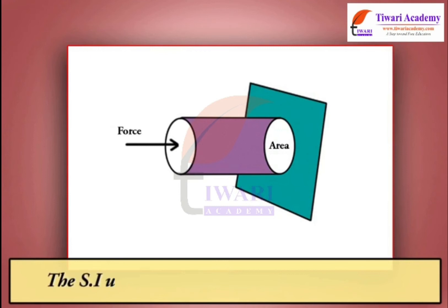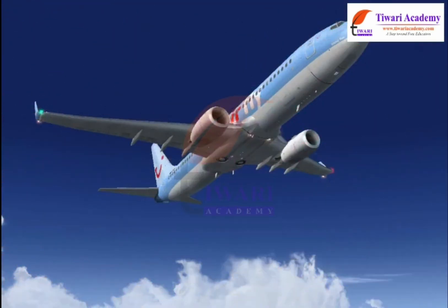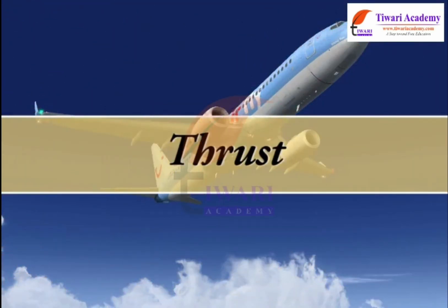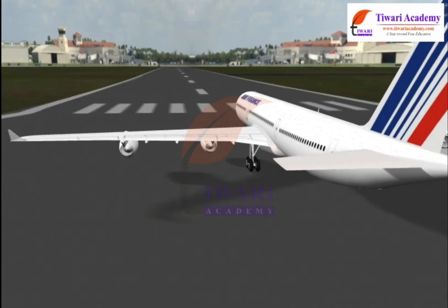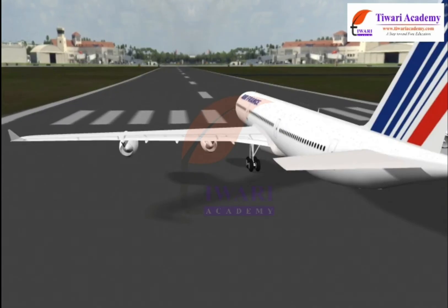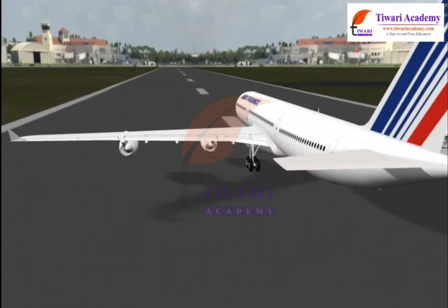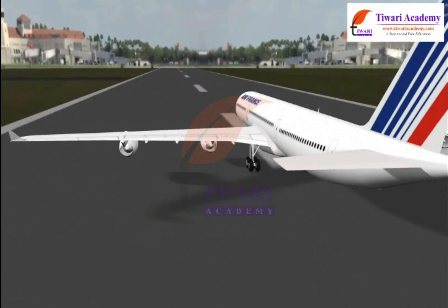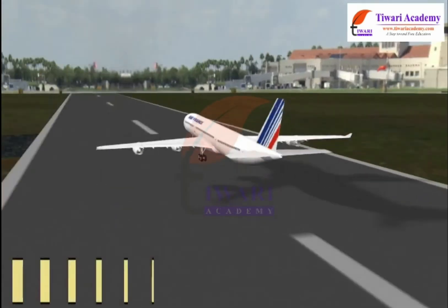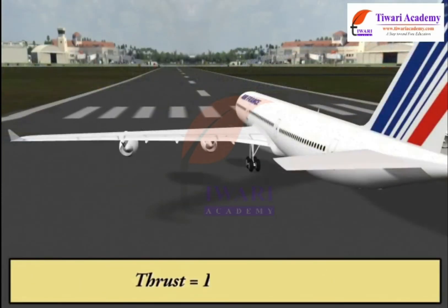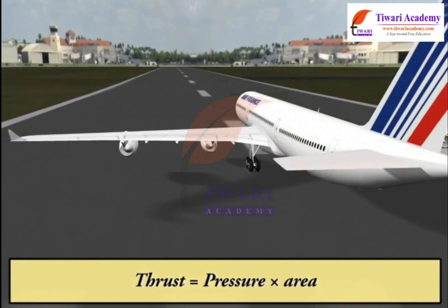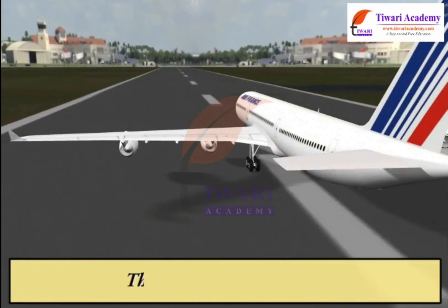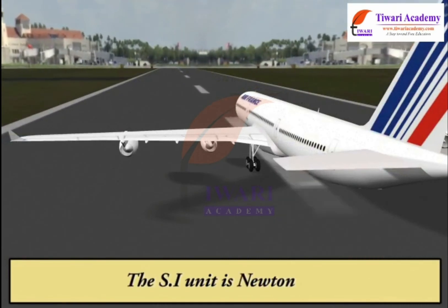The SI unit of pressure is Newton per square meter, N/m². The force acting on a body perpendicular to its surface is called thrust. Thrust is equal to pressure multiplied by area. The SI unit of thrust is Newton, N.